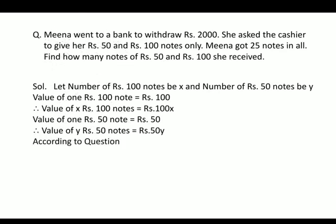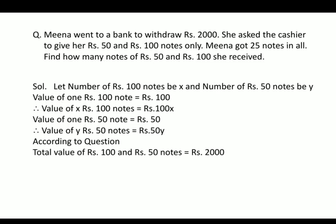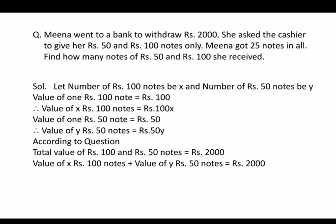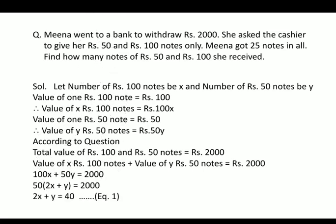According to the question, Meena withdrew Rs. 2000 in only Rs. 100 and Rs. 50 notes, so the total value of Rs. 100 and Rs. 50 notes equals 2000. Therefore 100x plus 50y equals 2000. Taking 50 as common: 2x plus y equals 40. That is equation number 1.